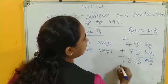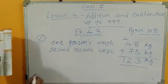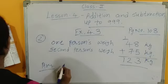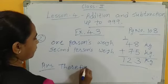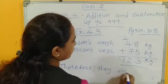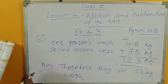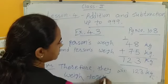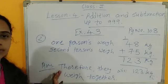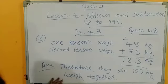So 123 kg. Both persons weight. So therefore, answer. Therefore, they will 123 kg weight together. In word problem, you have to write like this sentence and answer also in last. So therefore, they will 123 kg weight together.